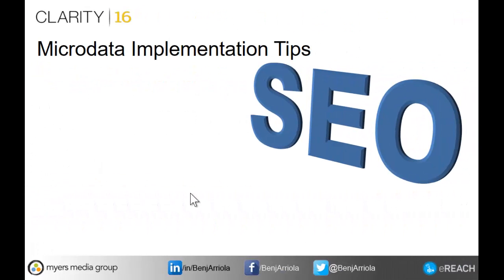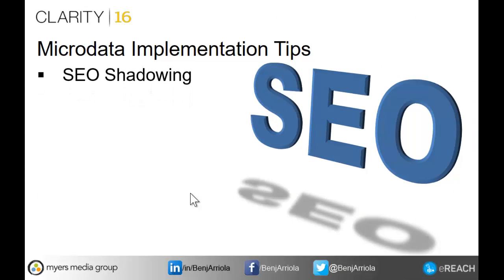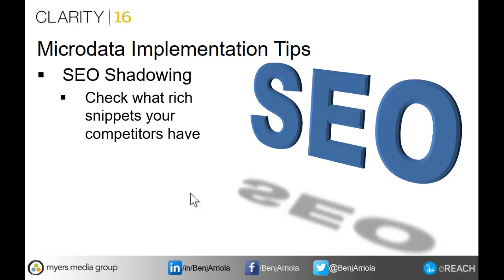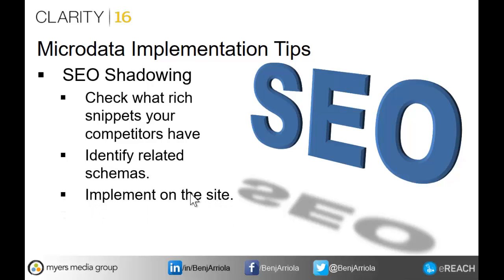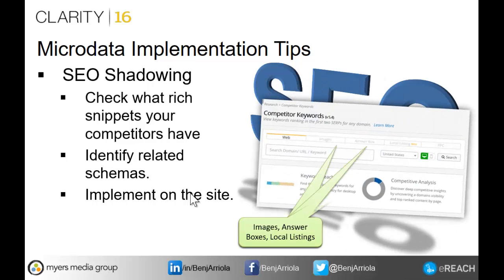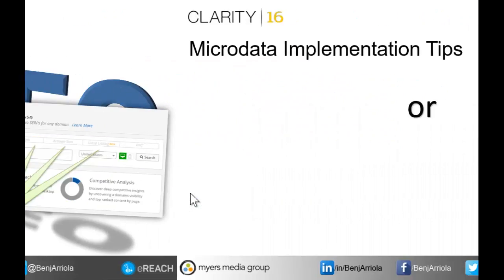I'm going to go through several implementation tips. The first thing I'll call SEO shadowing. Shadowing is simply checking what rich snippets your competitors have, and once you see your competitors have some type of rich snippet, identify the related schemas and implement them on your site — simple as that. Spying on your competitors. Within SEO Clarity, there are ways to view your competitors: what type of image results, answer boxes, and local listings appear, which could also help you find what your competitors are currently using.